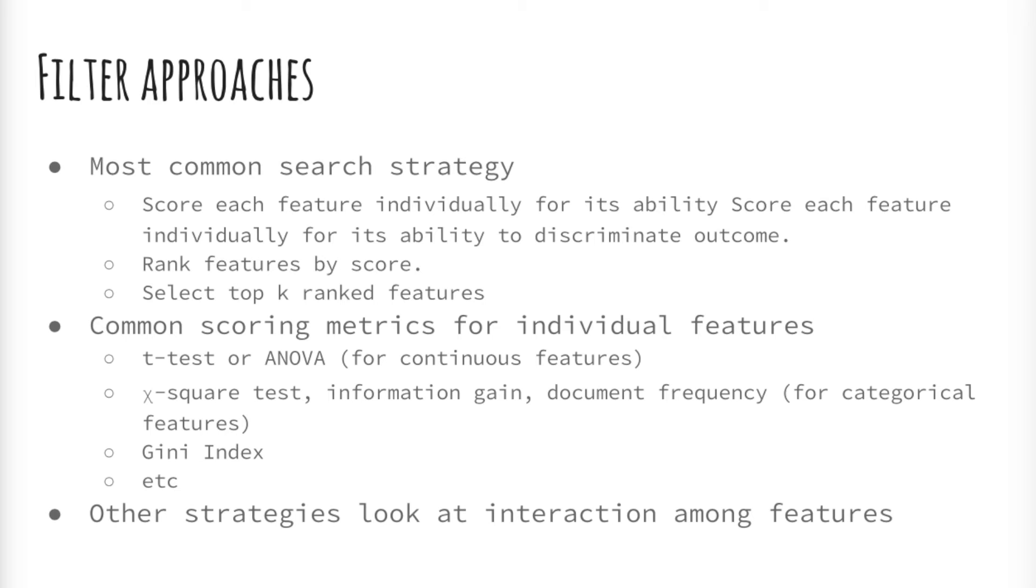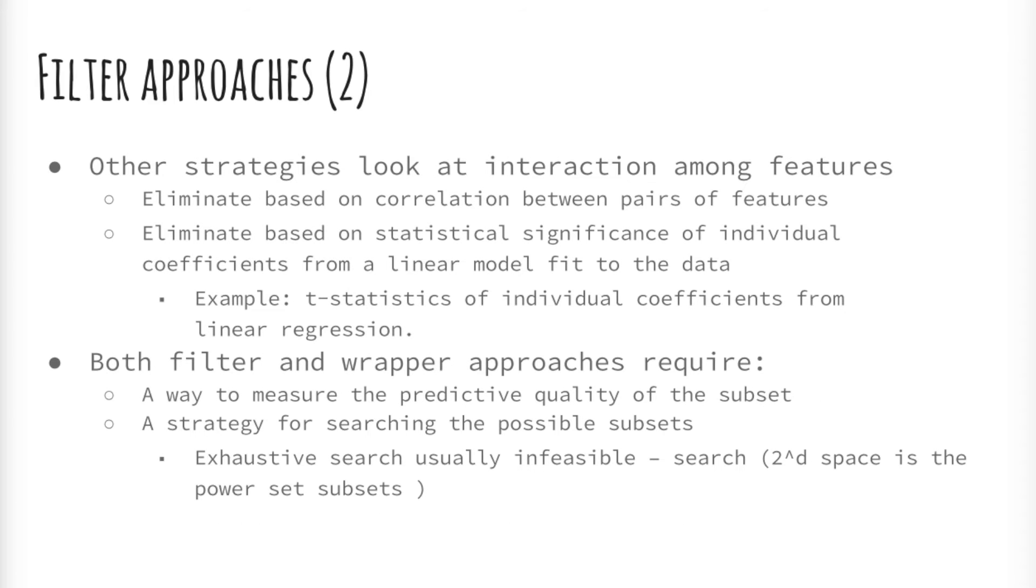Filtering is the most common search strategy. The basic idea of assigning a heuristic score to each feature to filter out the obviously useless ones raises several questions. Does the individual feature seem to help prediction? Do we have enough data to use it reliably? These approaches are very fast and simple to apply, but they have their disadvantages. Other filtering strategies look at interactions among features. Features are eliminated based on the correlation between pairs of features. Features are eliminated based on statistical significance of individual coefficients from a linear model fit to the data. For example, t-statistics of individual coefficients from linear regression.